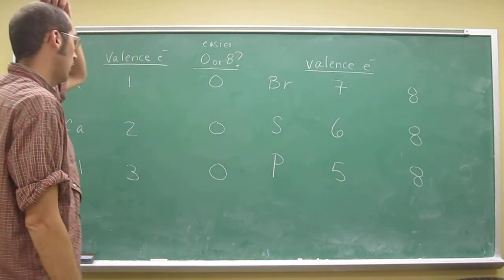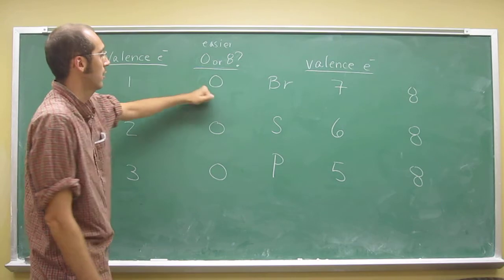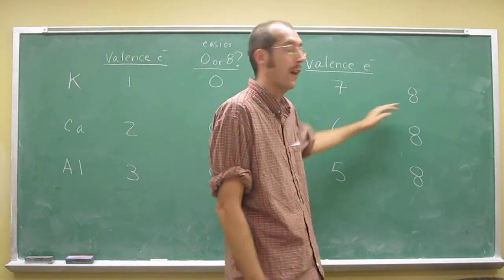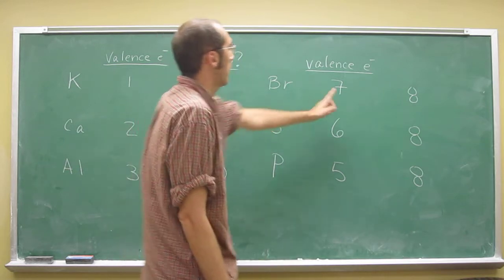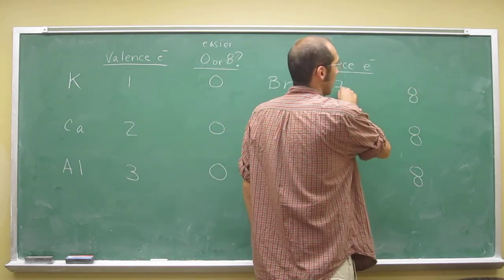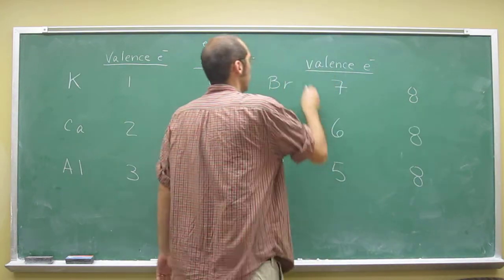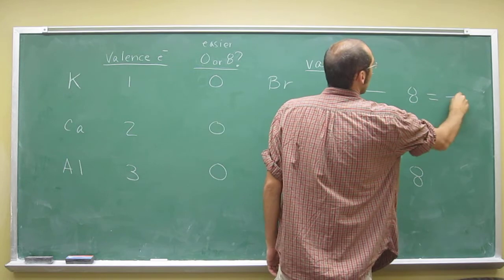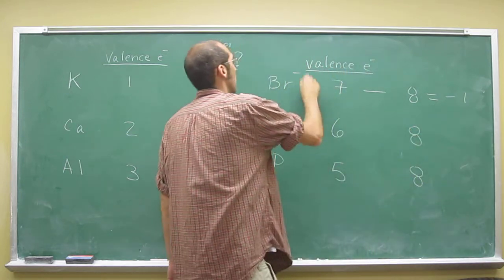So you can determine the charge by how many electrons you lost to get to that number, or how many electrons you gained to get to that number. So here we gain one electron, right? Because eight minus seven is one. Or if you want to do it this way, seven minus eight equals negative one. So that's the charge you're going to have.